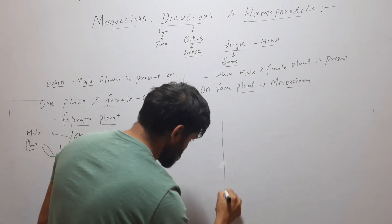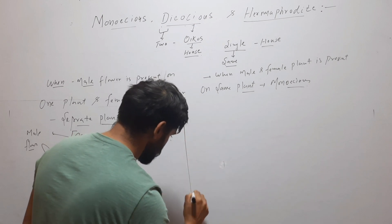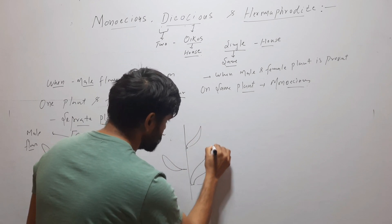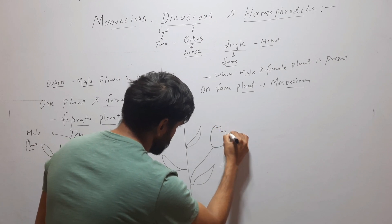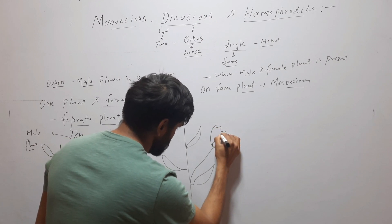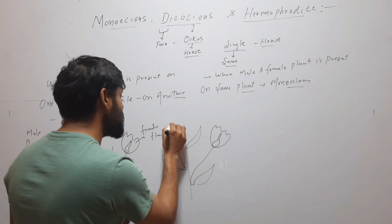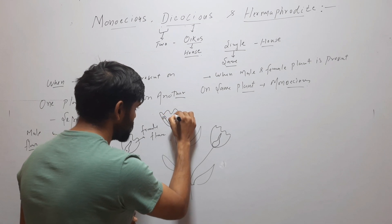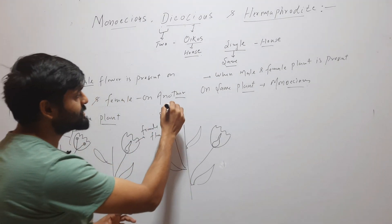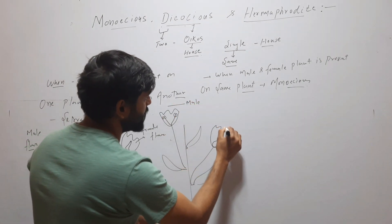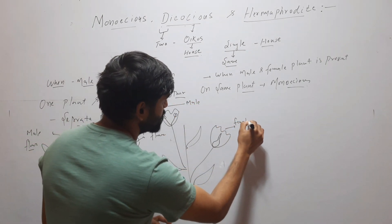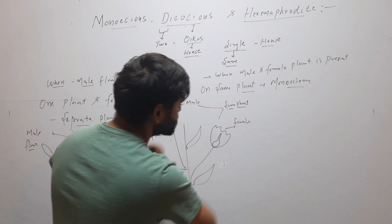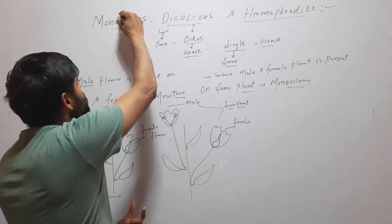Suppose this is our plant and this is a flower — this is female flower. And on that same plant, another flower is present that is male flower. Here you can see that both male and female are present on same plant, so this condition will be called Monoecious.